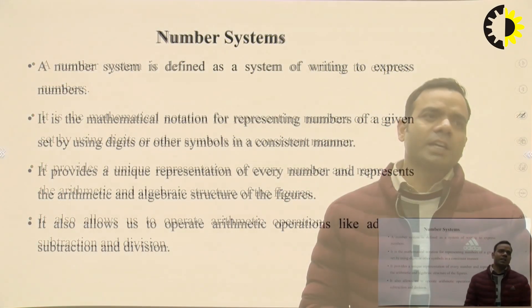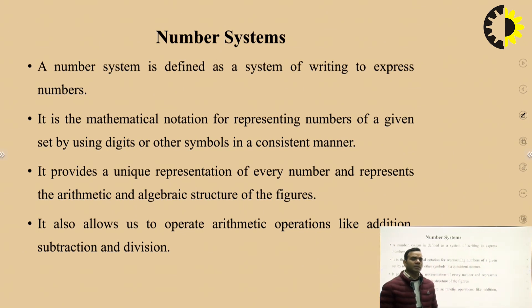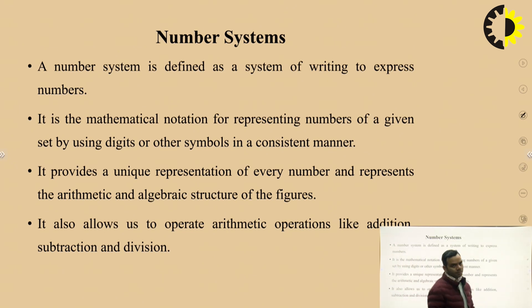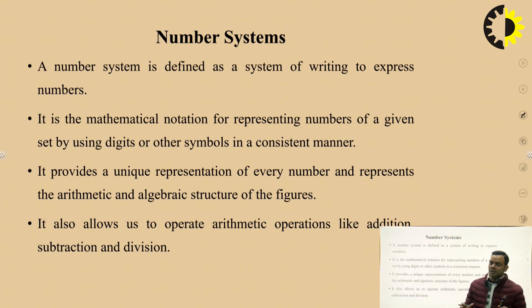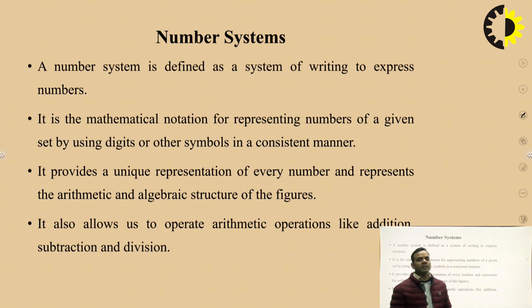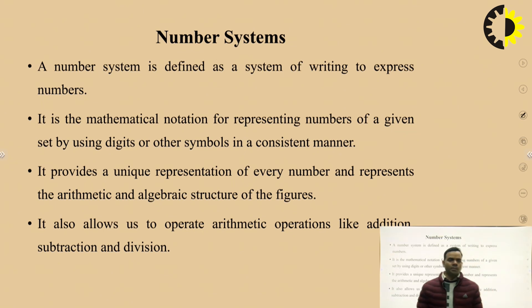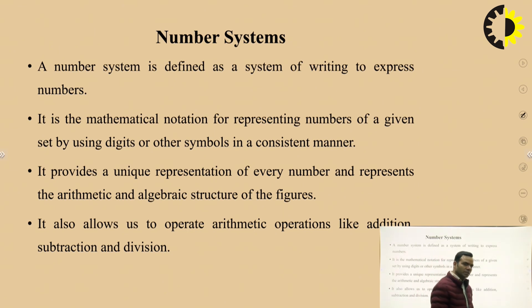A number system provides a unique representation of every number and represents the arithmetic and algebraic structures of figures. Basically, in number systems we can represent any quantity which can be counted. In a number system, there will be certain digits or symbols, and these symbols and digits will repeat after a certain regular interval — meaning the number of symbols and digits will be limited.